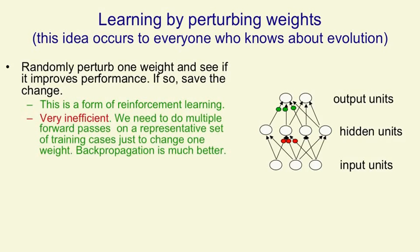The problem is it's very inefficient. Just to decide whether to change one weight, we need to do multiple forward passes on a representative set of training cases. We have to see if changing that weight improves things, and you can't judge that by one training case alone. Relative to this method of randomly changing a weight and seeing if it helps, backpropagation is much more efficient — actually more efficient by a factor of the number of weights in the network, which could be millions.